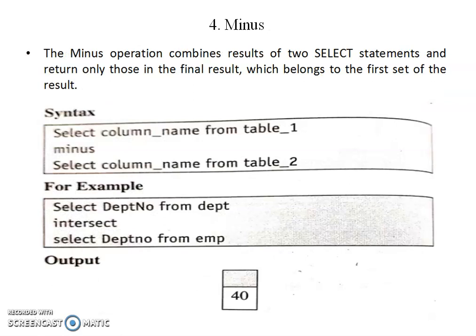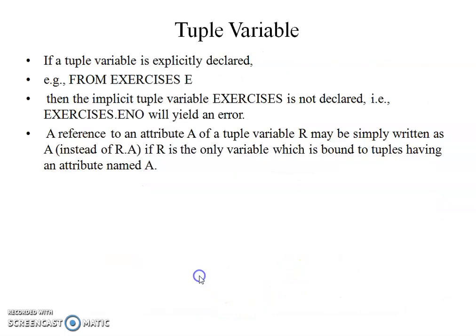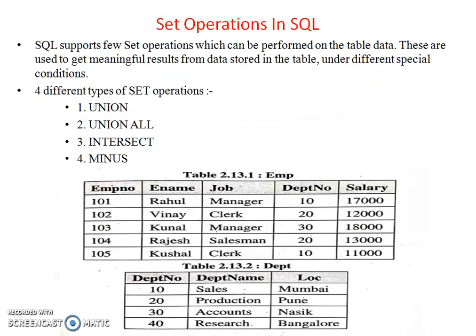Now we discuss the MINUS operator. The MINUS operation combines the result of two SELECT statements and returns only those rows in the final result which belong to the first result set but are absent in the second query, with no duplicates, and data is arranged in ascending order by default. Syntax: SELECT department_number FROM department MINUS SELECT department_number FROM employee. The output is 40, meaning only the record present in the first table but not in the second is returned.